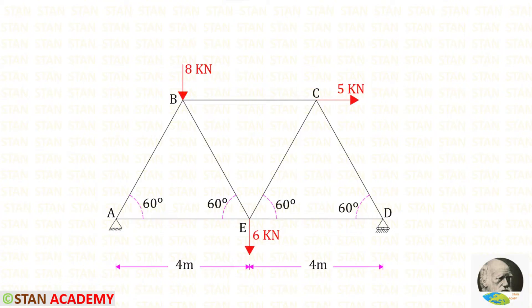In this truss, at point A there is a hinged support. In a hinged support, there will be two reactions: a vertical reaction and a horizontal reaction. At point D, there is a roller support, and in this support there will be only one reaction, that is the vertical reaction.